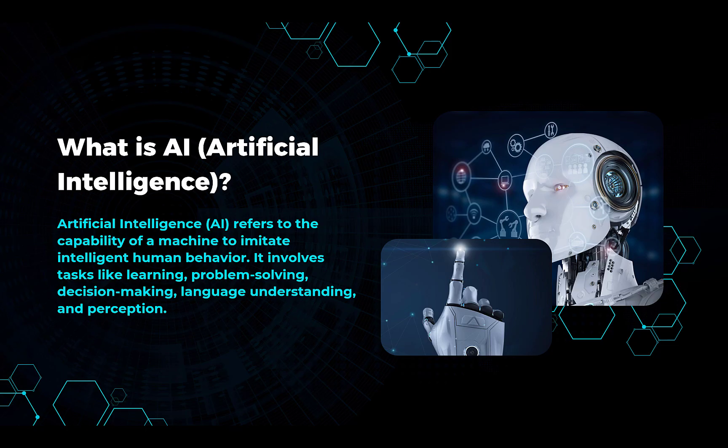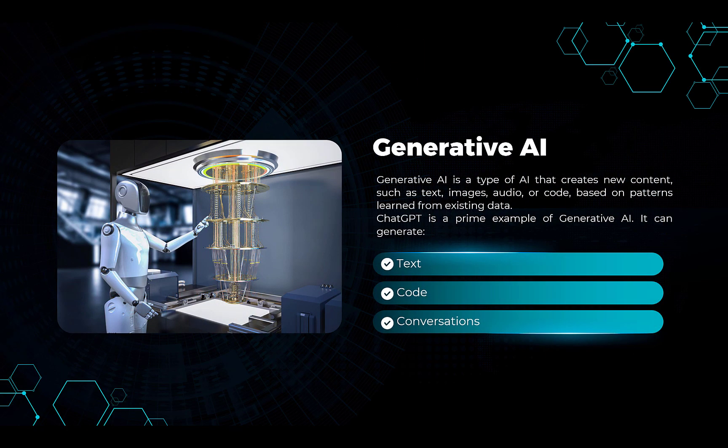Now, what is generative AI? Generative AI is basically a type of AI which creates new content — text, images, audio, and code — based on patterns learned from existing data. ChatGPT, which we use on a daily basis, is the prime example of generative AI, where you can generate text, code, and conversations.